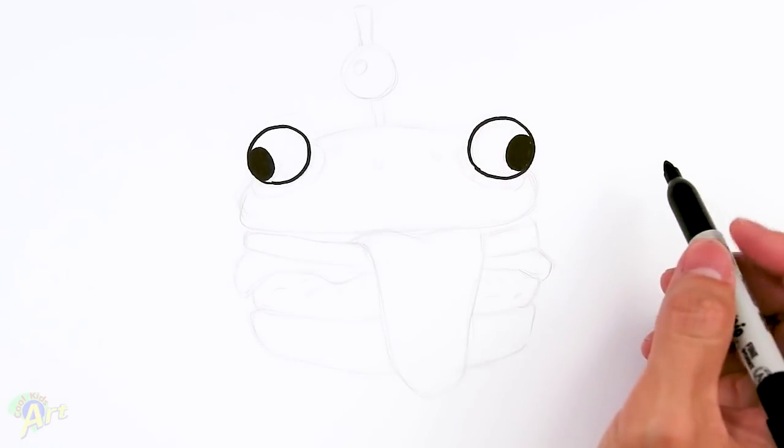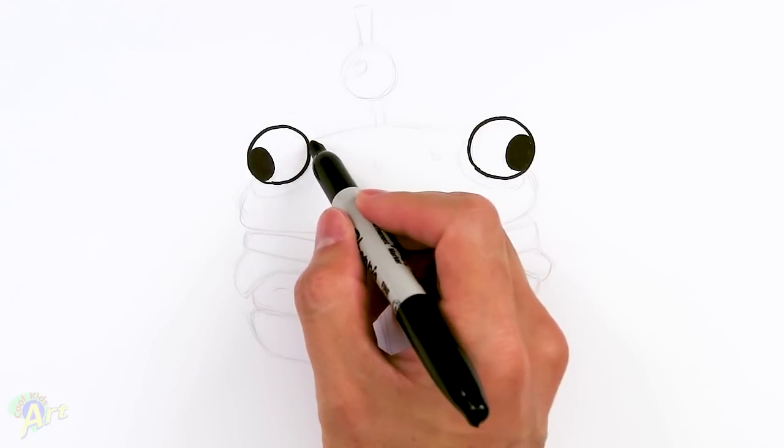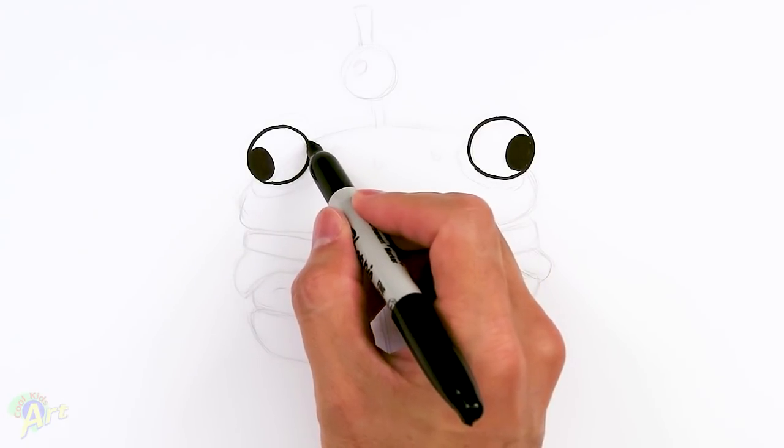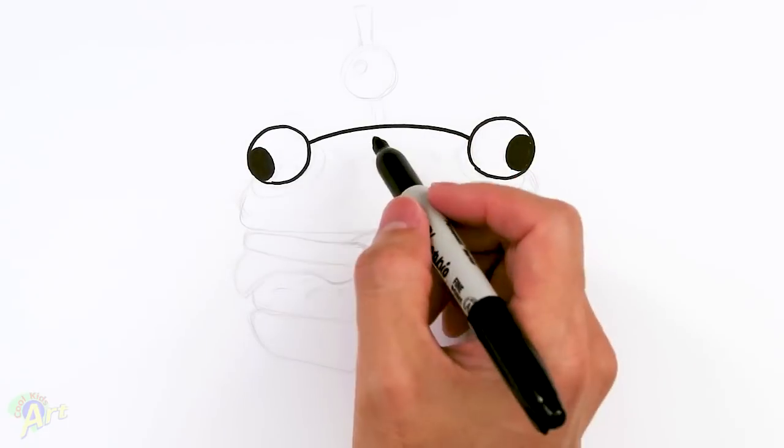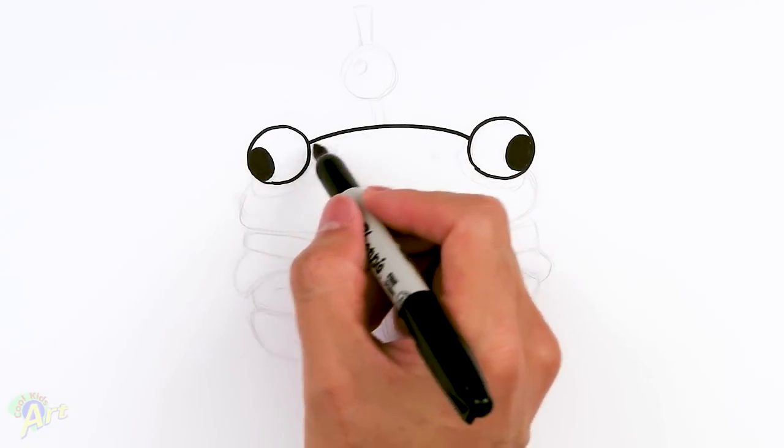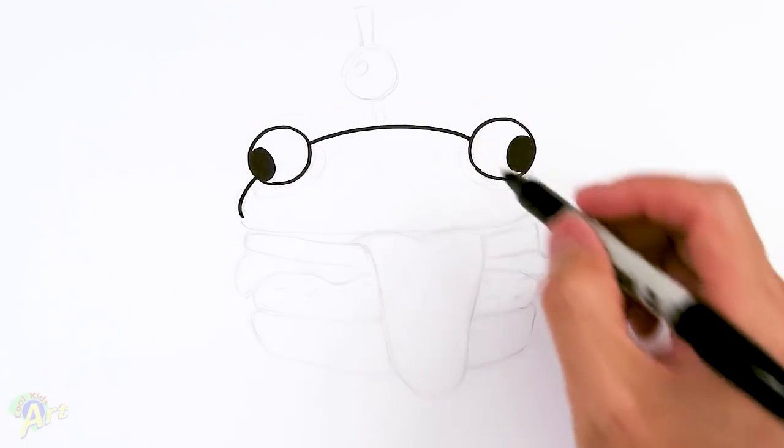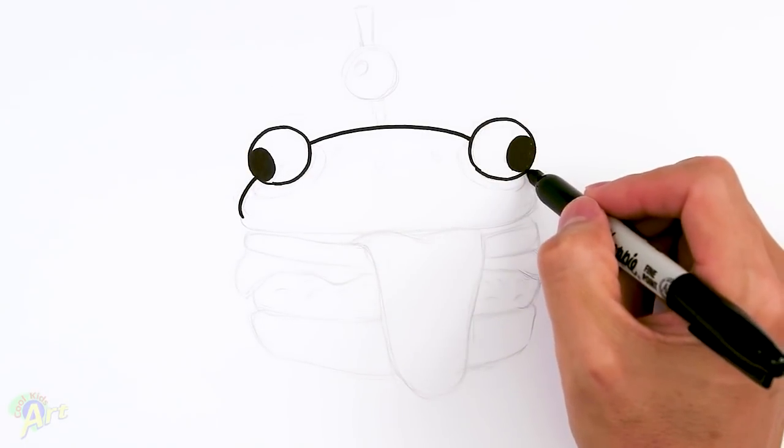Okay, so once you have that, now we're just gonna draw the bun around it. So find the middle point here and we're just gonna draw one curve. And then we're gonna continue this curve through the eye. Come out the other side. Continue this curve.